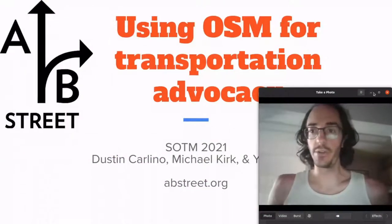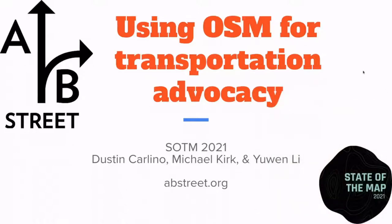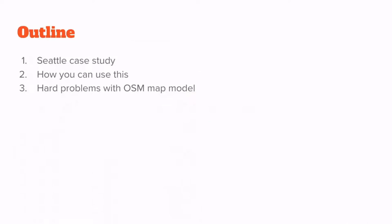We're getting to our last talk of State of the Map 2021. Dustin is here to answer your questions during the talk in the questions tab. This is about using OSM for transport advocacy using AB Street. Hello, I'm Dustin Carlino and this is a talk about using OpenStreetMap for transportation advocacy using software called AB Street, work done with Michael Kirk, You, and Lee. This talk will first jump into a demo of how to use OpenStreetMap to argue for change in Seattle.